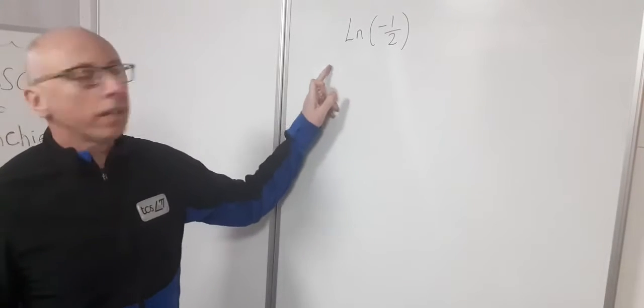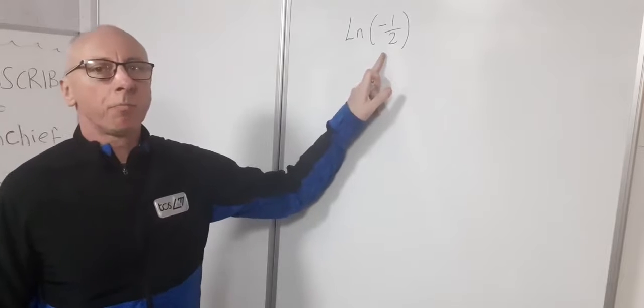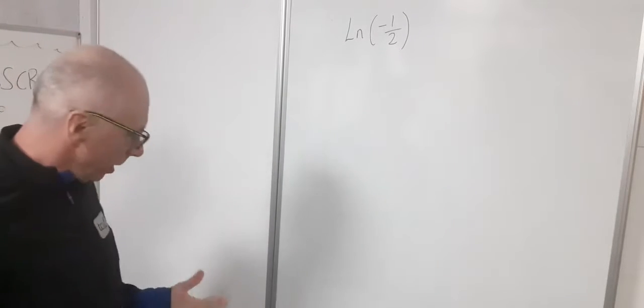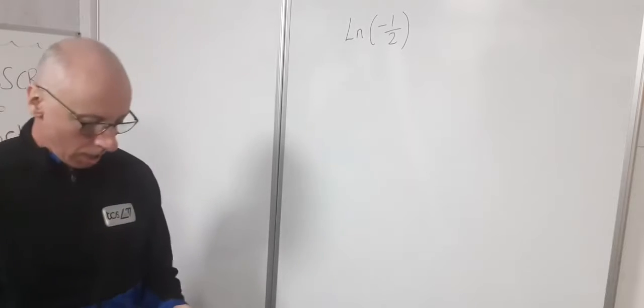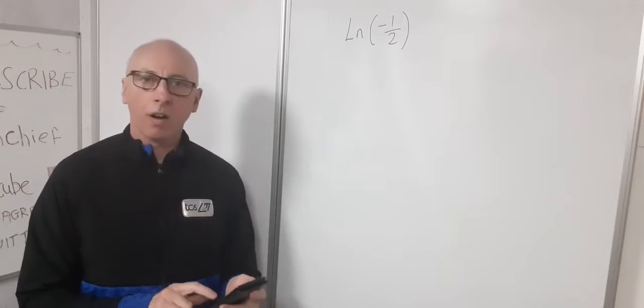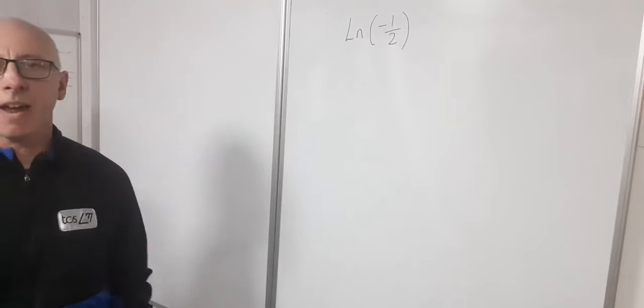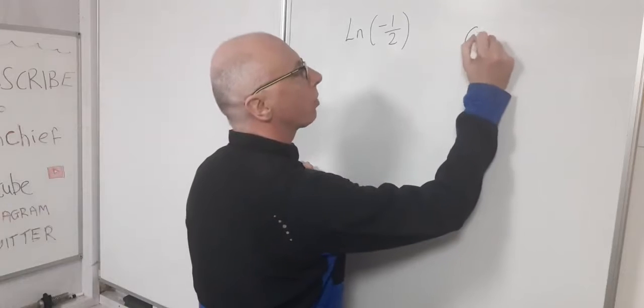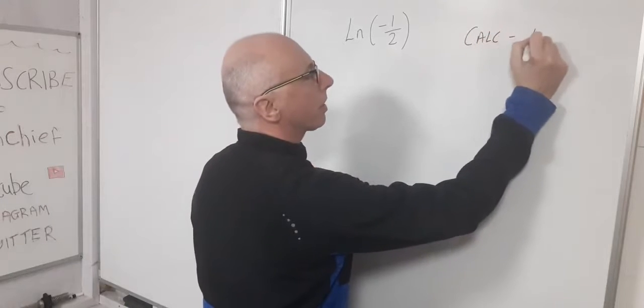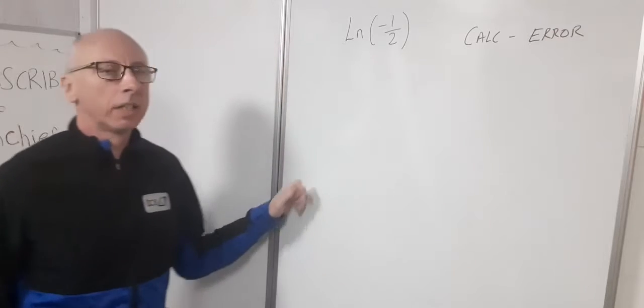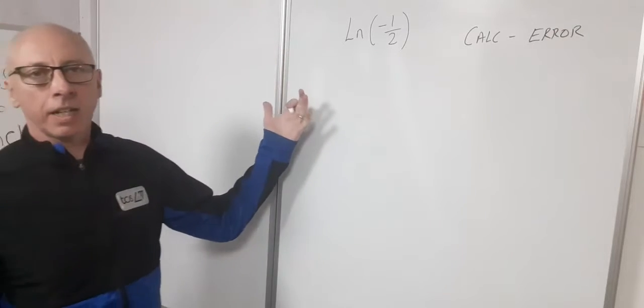I've got a fun question here: what's the natural logarithm of minus one-half? Let's plug that into the calculator and see what happens. Natural logarithm minus one-half, my output would be error. So in real terms, no logical solution. My calculator reads error. So how are we going to find an answer to this?